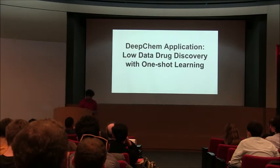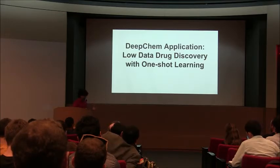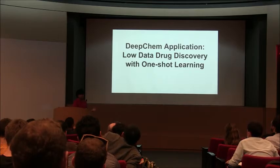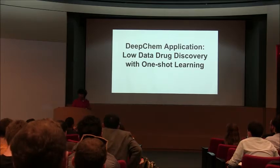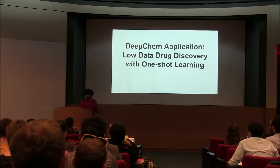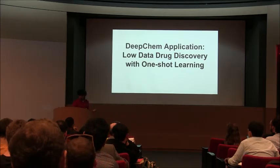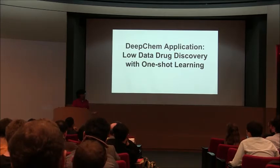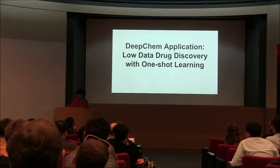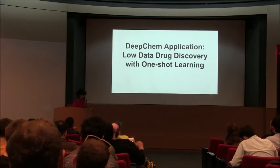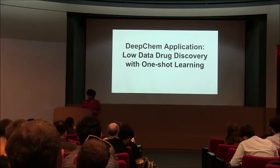That said, what we built in the previous paper was cool, but it was something you could have done with a standard toolkit like scikit-learn plus RDKit. The question is: when does the power of the deep methods really start to come into play? Our recent paper using one-shot learning is, I think, a great example of when you really do need the full power of a tool chain like DeepChem.